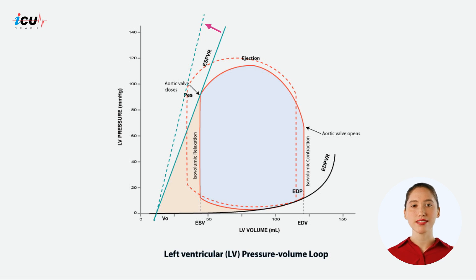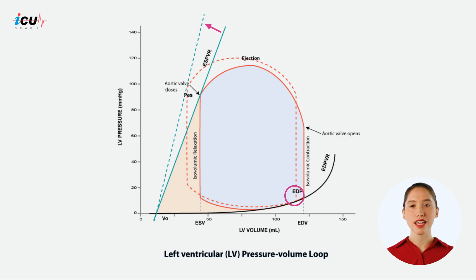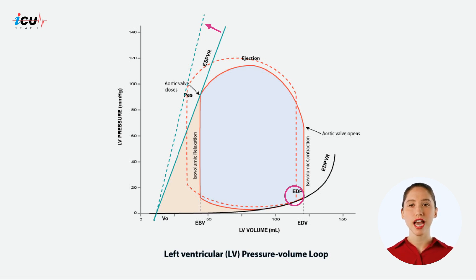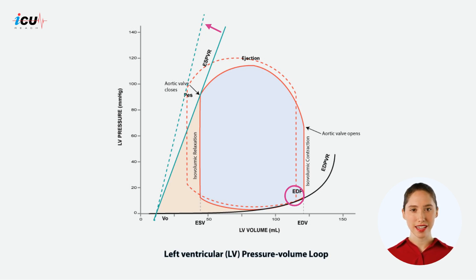Now, because the heart empties more efficiently, there might be a slight reduction in end diastolic volume as the heart cycles through more complete ejections and fills. However, EDV is primarily influenced by venous return and ventricular compliance rather than contractility, so it may remain relatively constant or decrease slightly.